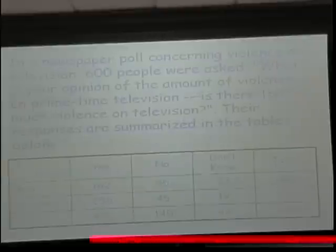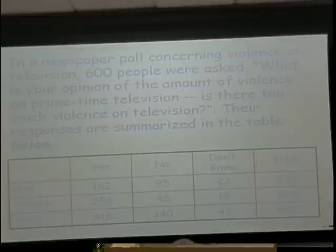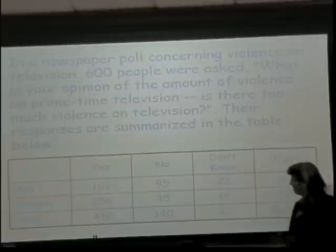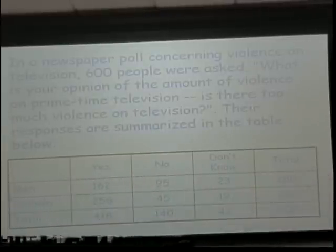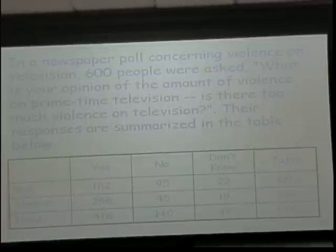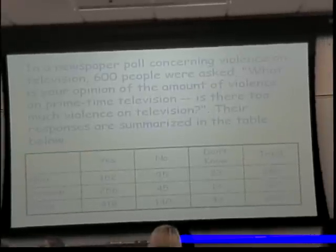Now, we're going to ignore that because it doesn't make sense until we get to the tree diagram. So once we've drawn a tree diagram, we'll go back and look at how to read our tree diagram and do probabilities there. For now, we have a newspaper poll related to violence on television. 600 people were asked, what is your opinion of the amount of violence on primetime television? Is there too much violence?